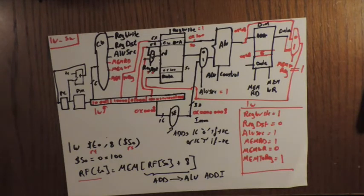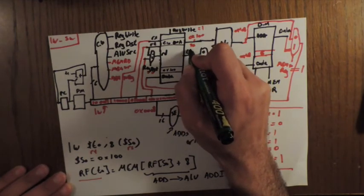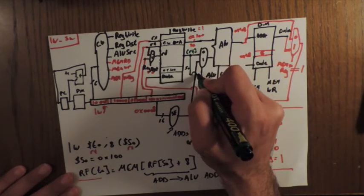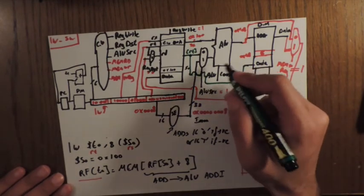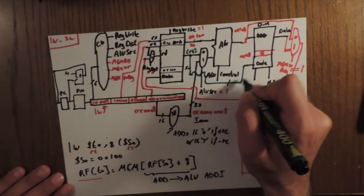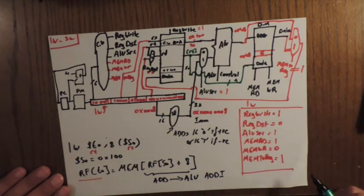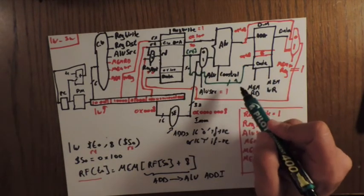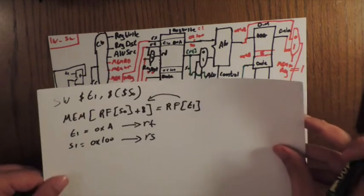To implement SW, we only need to add one connection: RT's output from the register file is connected directly to the data input of the data memory. This carries the value 0xA to be stored at the calculated address 0x108. No other structural change is needed — just this wire connecting RT to the data port of data memory.